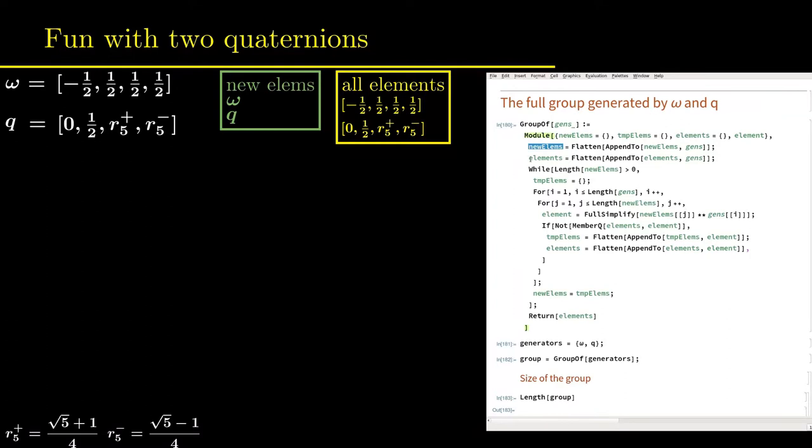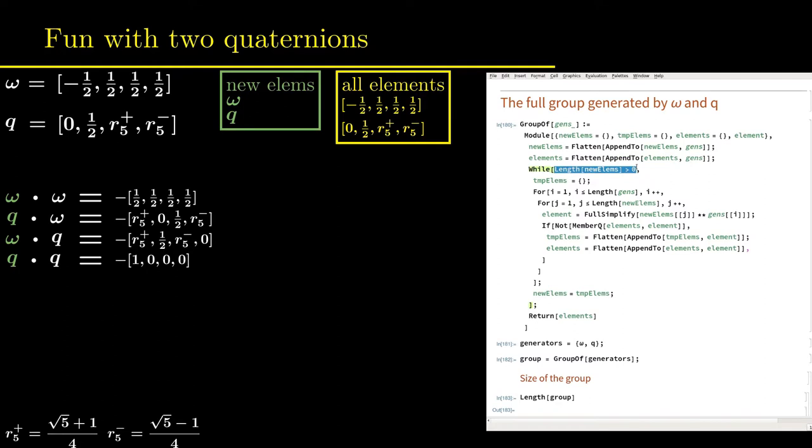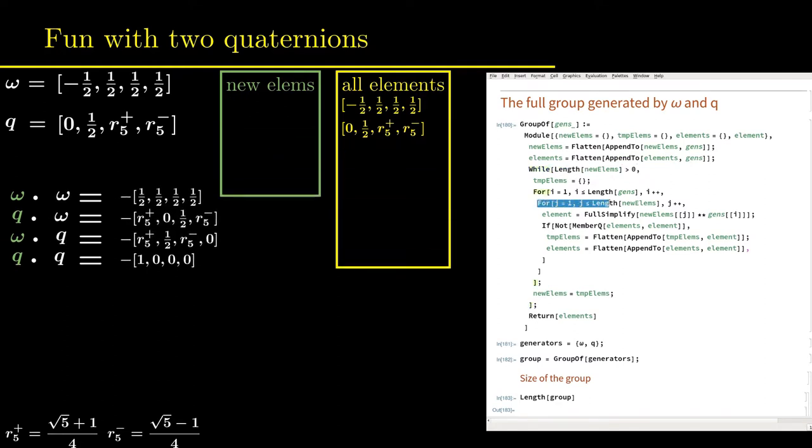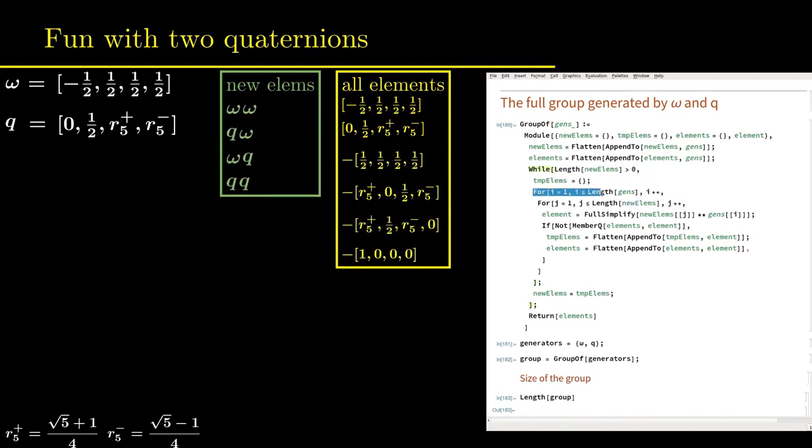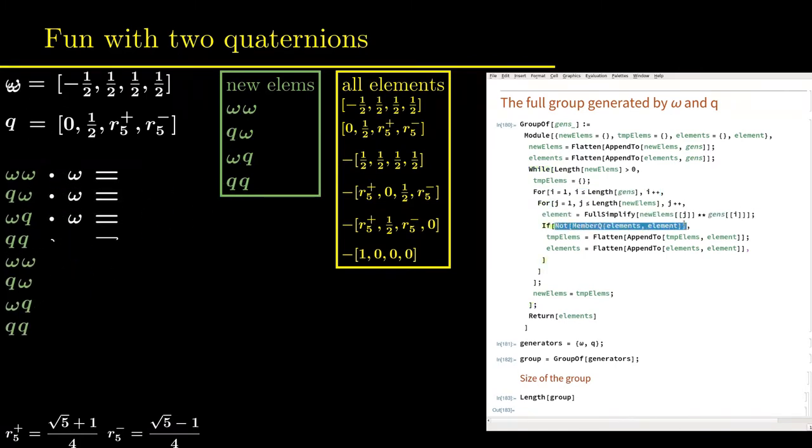Each of them is multiplied from the right with either of the generators omega and q to form four new elements. There is one more list called all elements where all generated quaternions are stored. These four quaternions are now treated as newly generated elements and they are also added to the list of all elements. Then the process is repeated with these four new elements.